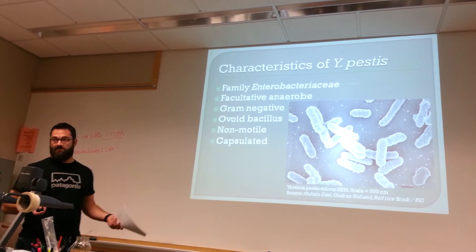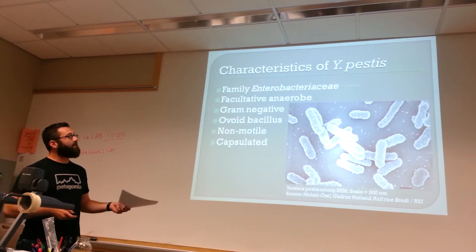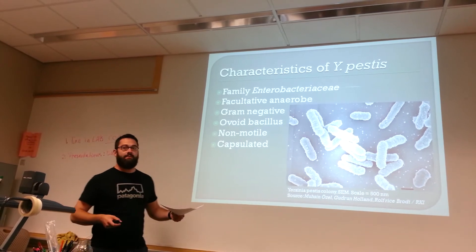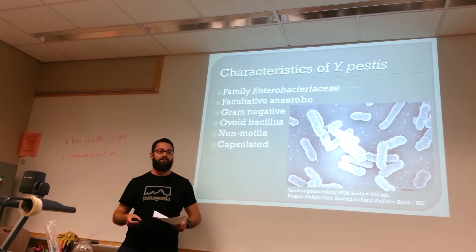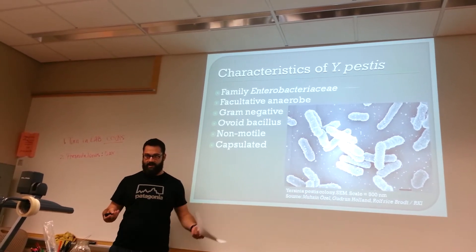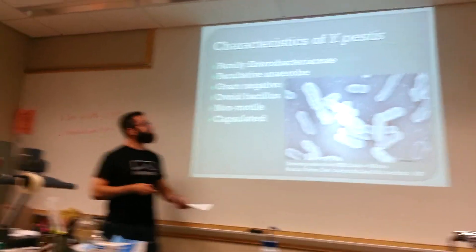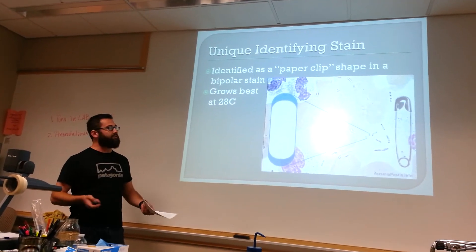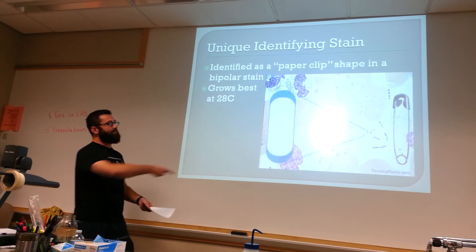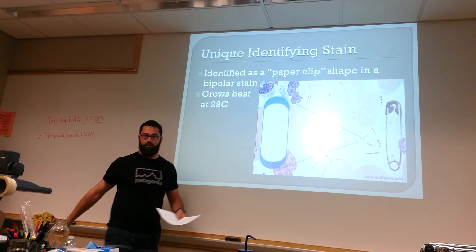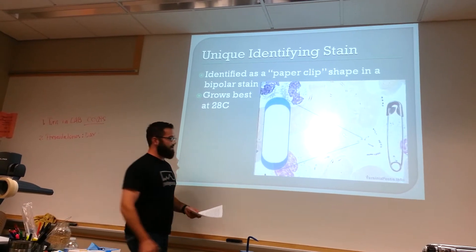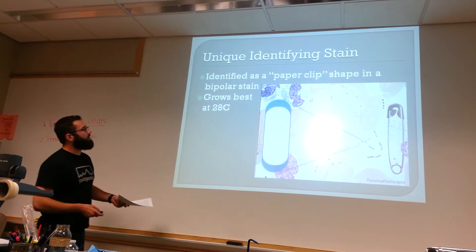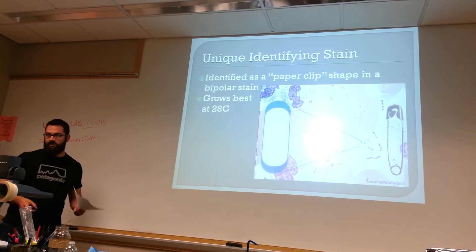It's a member of the family Enterobacteriaceae. It's a facultative anaerobe, gram-negative, ovoid bacillus, non-motile, encapsulated. You can identify Yersinia pestis by its unique paperclip-shaped stain in a bipolar stain. The reason for this is the double membrane — you can see a very clear paperclip shape — and it grows best at 28 degrees Celsius.